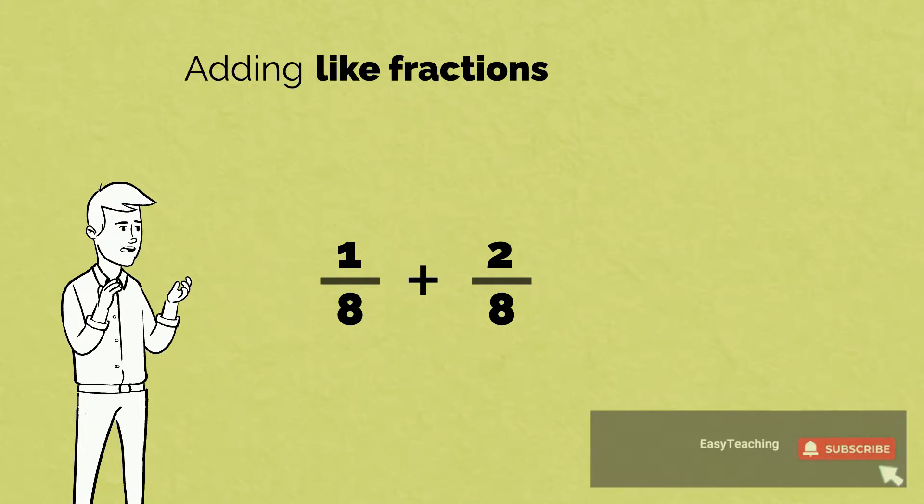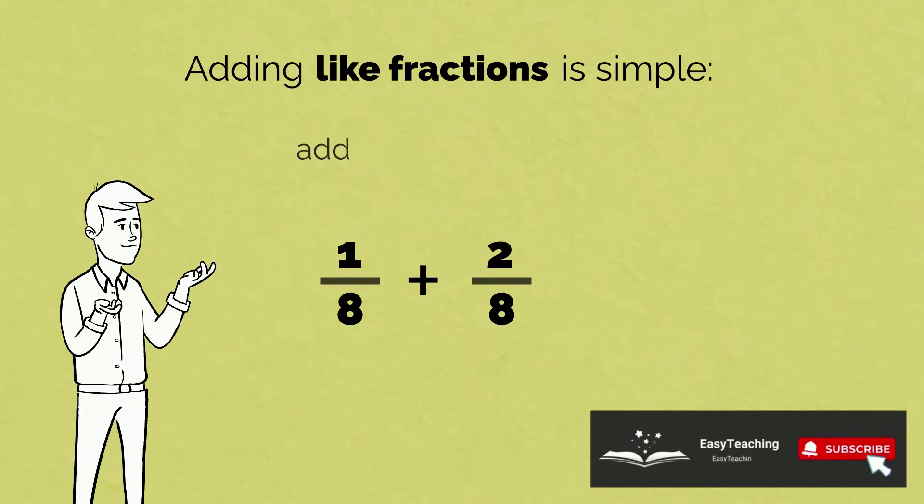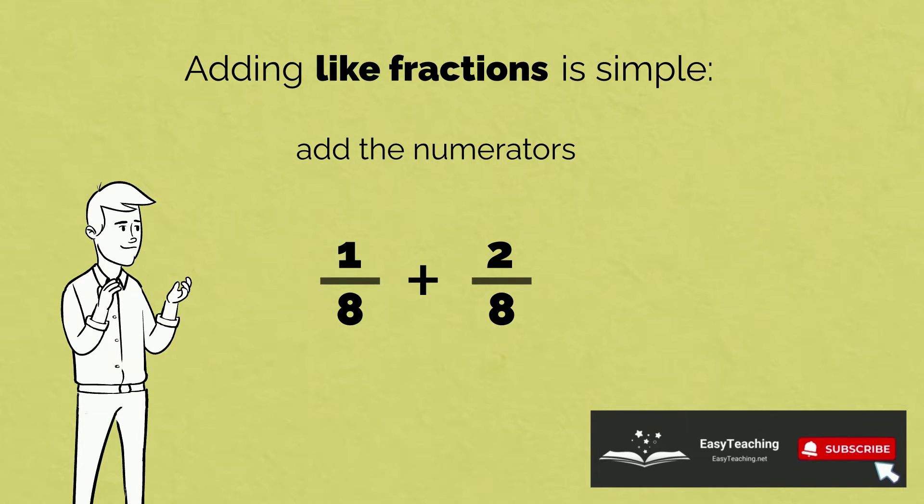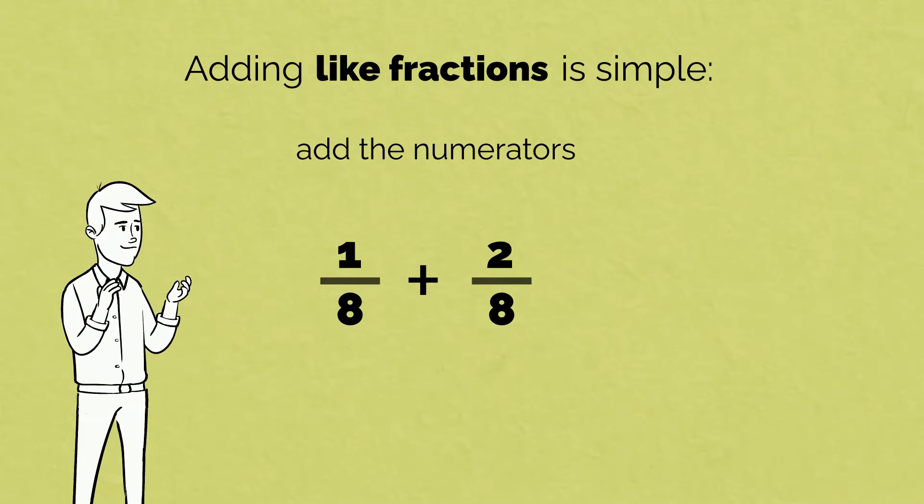Adding like fractions is simple. We just add the top numbers, the numerators. The denominators stay the same. 1 eighth plus 2 eighths equals 3 eighths.